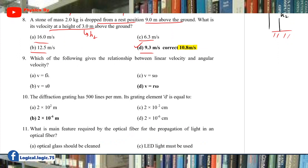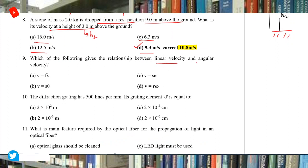Question 9: The relationship between linear and angular velocities is v = rω.